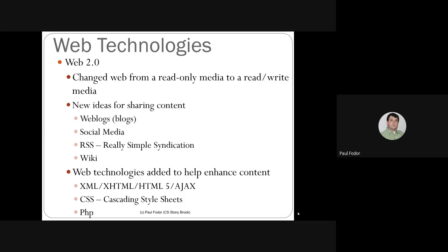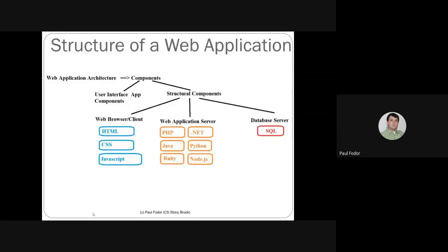XHTML was the next step, requiring all HTML code to be as well-formatted as XML. It then evolved to HTML5 and asynchronous JavaScript calls (AJAX). At this point there was one document containing both content and style, so cascading style sheets (CSS) were invented to standardize the look across many documents on the same website. On the server side, PHP was invented — a C-like language that responds to server calls and creates the HTML sent back to the client.